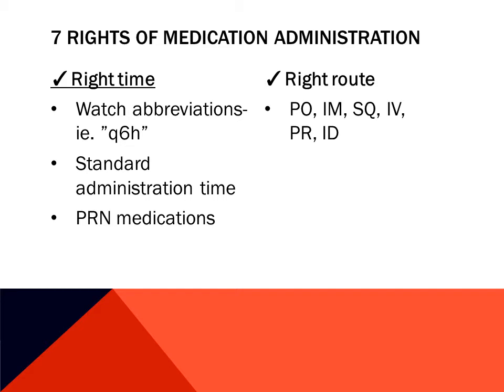Medications need to be given at the correct time. Know your standard abbreviations — for example, Q6H is every six hours. Most facilities order medications using military time, so make sure you're familiar with that. Some medications are routinely given throughout the day; for example, diuretics or water pills are usually given in the morning, and sleep pills are given at night. Before giving any PRN medication, which means as needed, check the patient's chart to ensure that you're within the right time frame.